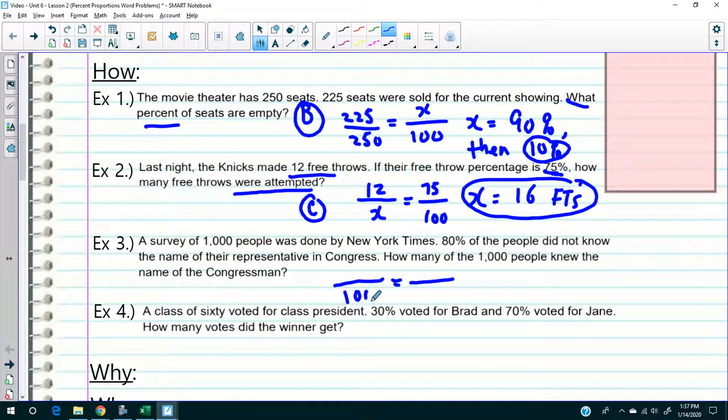A survey of a thousand people. This is out of a thousand people. 80% of the thousand people - so how many knew the name? 80% of them did not know, so 20% of them knew. I got to erase this. Again, you got to read these questions really, really carefully. So 20% knew the name of the congressman out of a thousand. So how many? In other words, this is a type what?